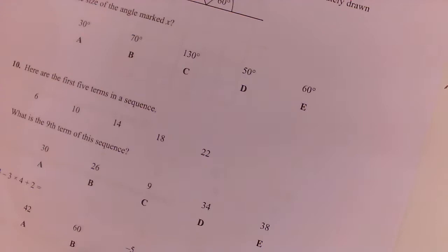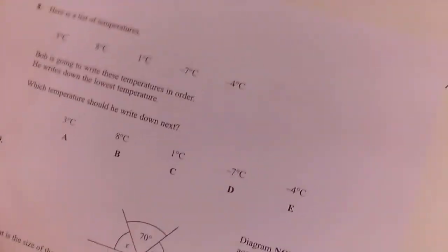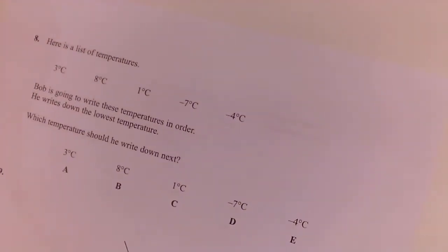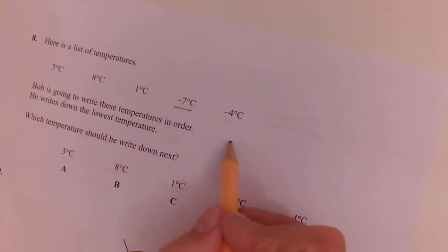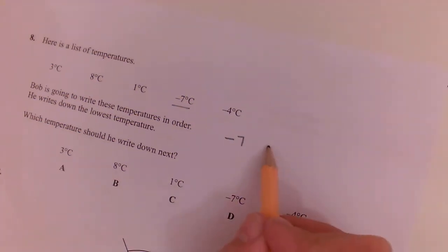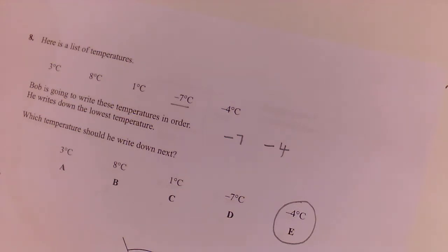Question eight. Here is a list of temperatures. Bob is going to write down the temperatures in order. He writes down the lowest temperature. What temperature should he write next? Well, if the lowest temperature is minus seven, the next one would be minus four. So the next one he should write down is minus four.